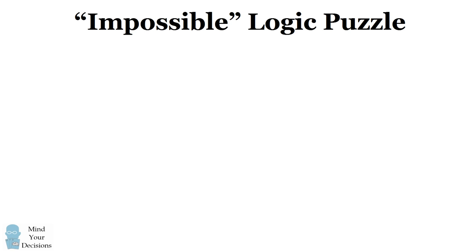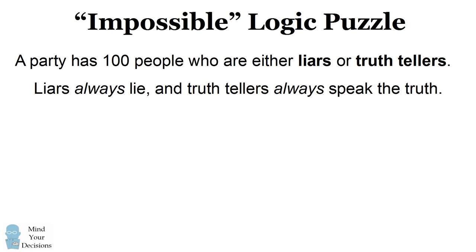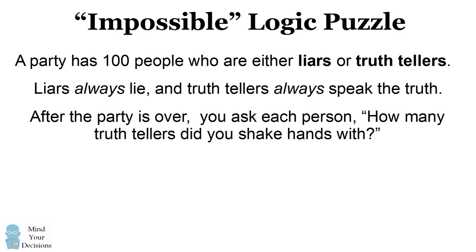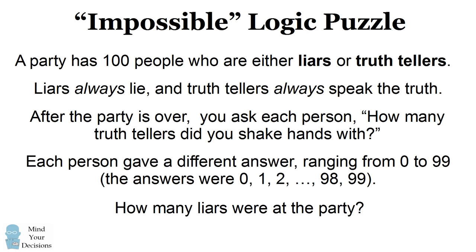Hey, this is Presh Talwalkar. A party has 100 people who are either liars or truth-tellers. Liars always lie, and truth-tellers always speak the truth. After the party is over, you ask each person, "How many truth-tellers did you shake hands with?" Each person gave a different answer, ranging from the numbers 0 to 99. The answers were the whole numbers from 0 to 99. How many liars were at the party?